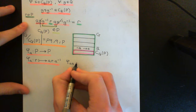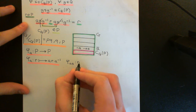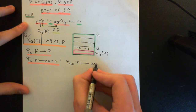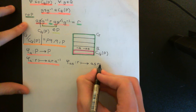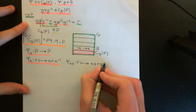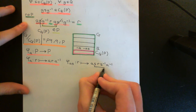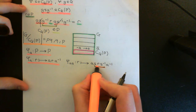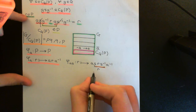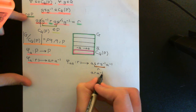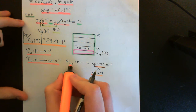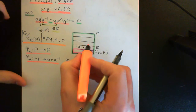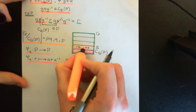Now, if we compose with an element s from the centraliser, this will map all little r onto exactly the same thing. By definition, it will map all little r onto a·s conjugating r — that is, a·s·r·s⁻¹·a⁻¹. Now, s·r·s⁻¹ is just equal to little r because s is in the centraliser of P in G. So this is little r, and therefore overall this is just the A-conjugate of little r — just conjugate little r by a. So truly, all of the elements that are in the same coset are representing the exact same automorphism of capital P.